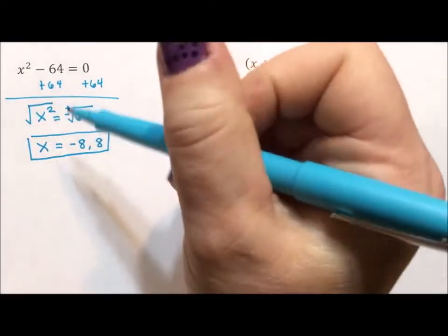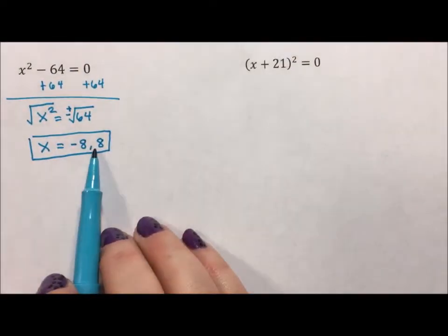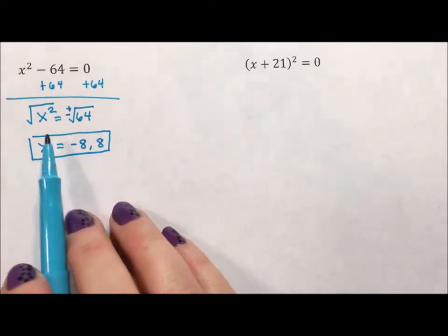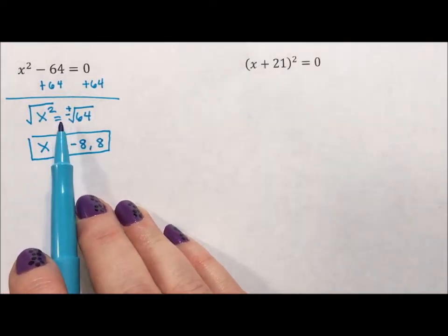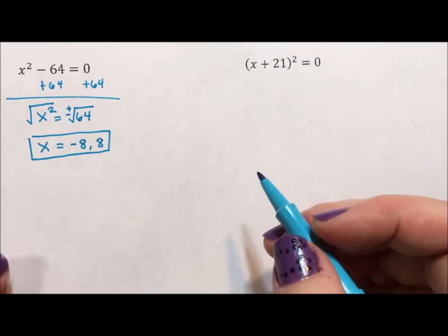If the exponent is even, you have to acknowledge that it could come from positive or negative. If it's odd, you don't have to worry about that. The thing that's odd about an odd exponent is there's only one place it could have come from.